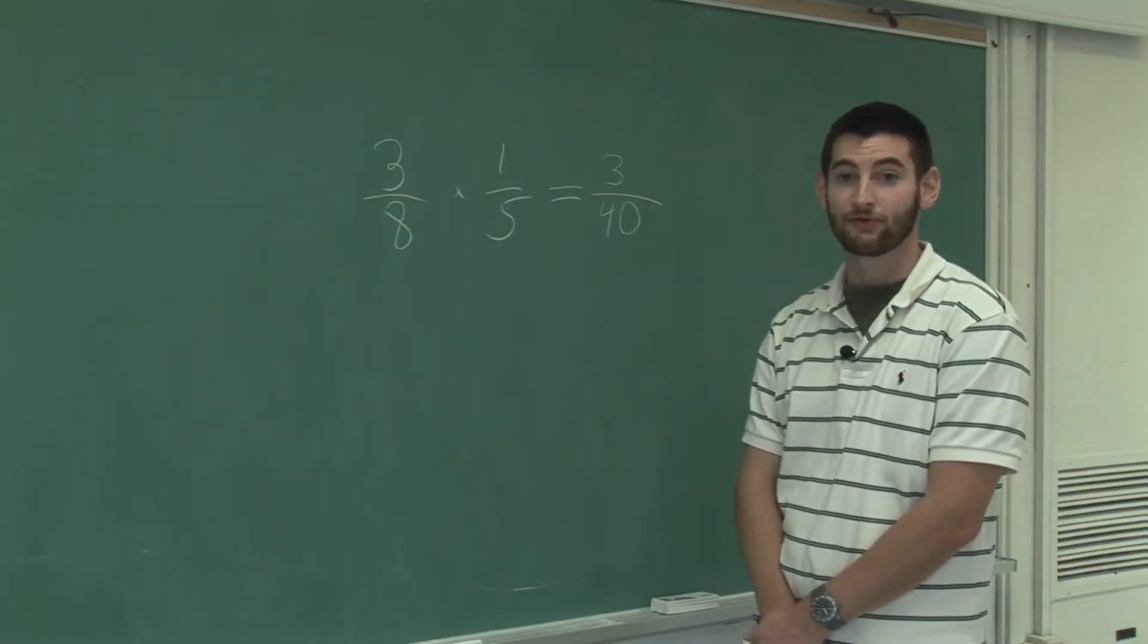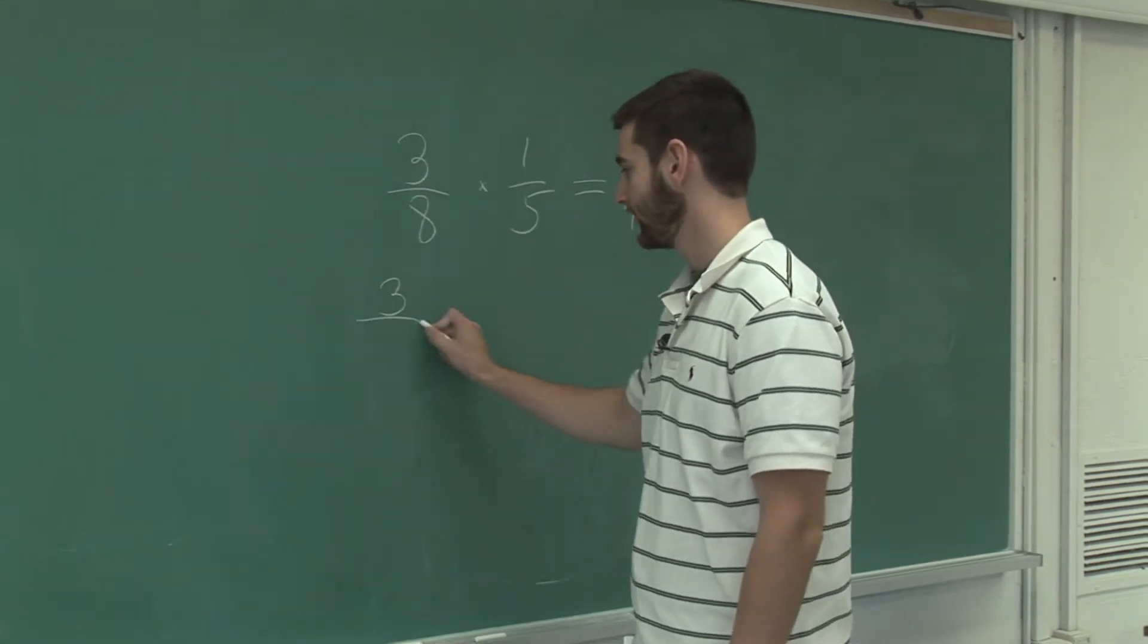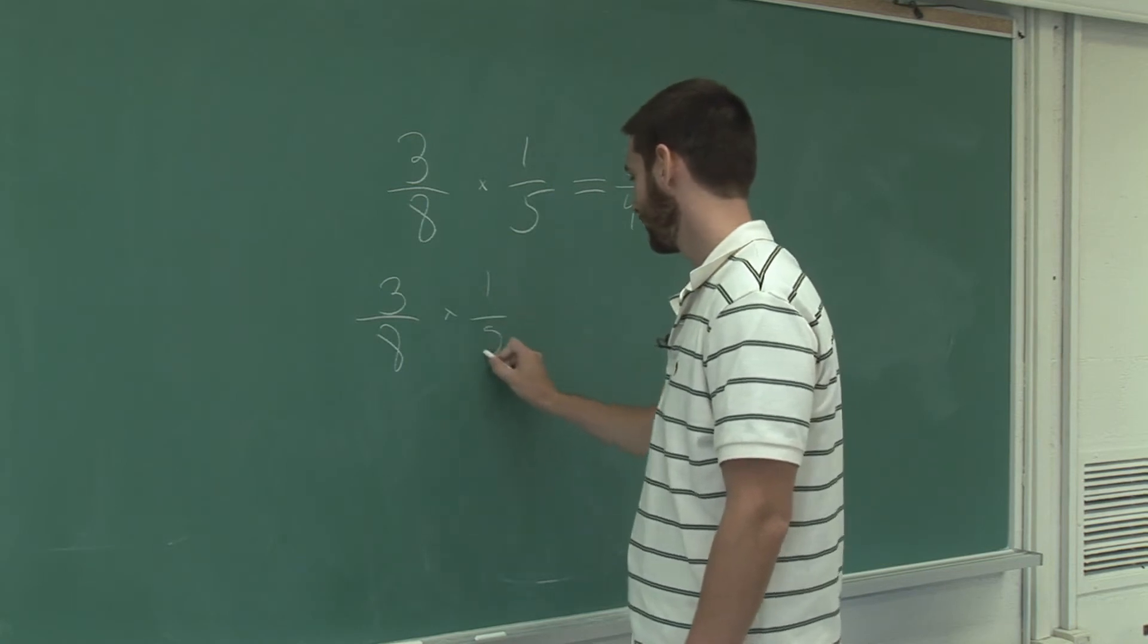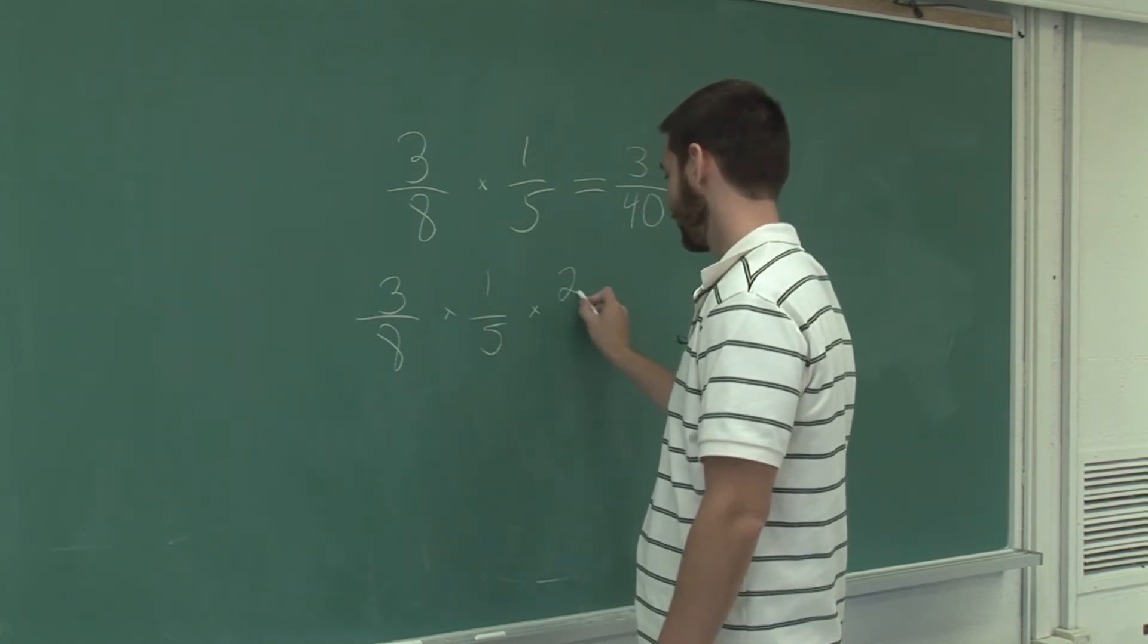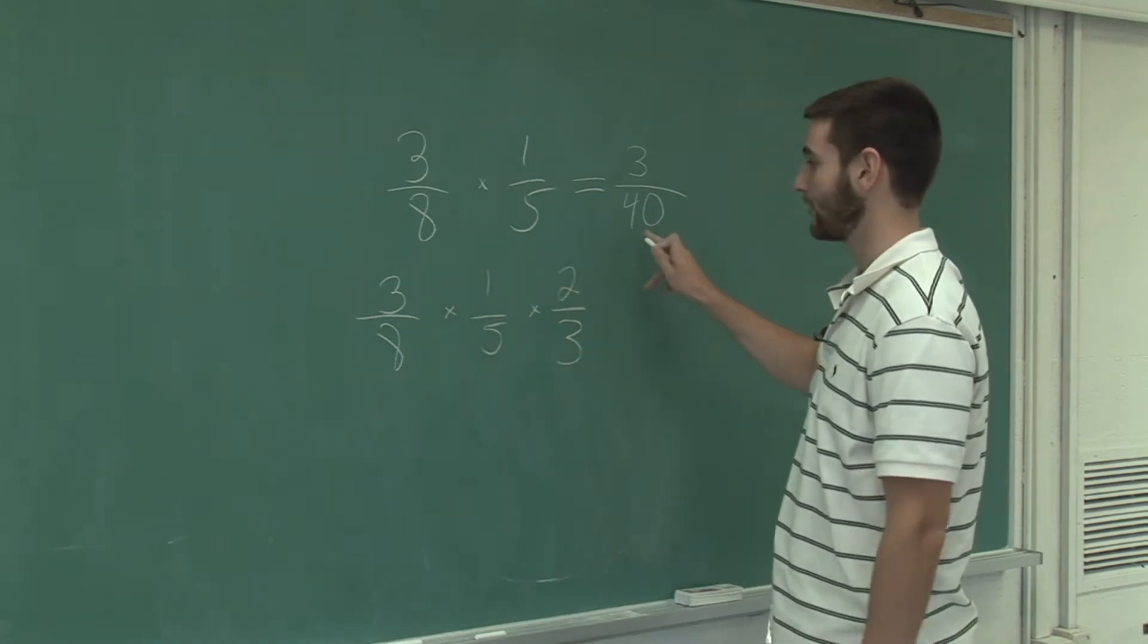Okay, to multiply three fractions together, like in this example, if I wanted to do three-eighths times one-fifth times two-thirds, I'd just follow the same procedure as I did for the original problem.